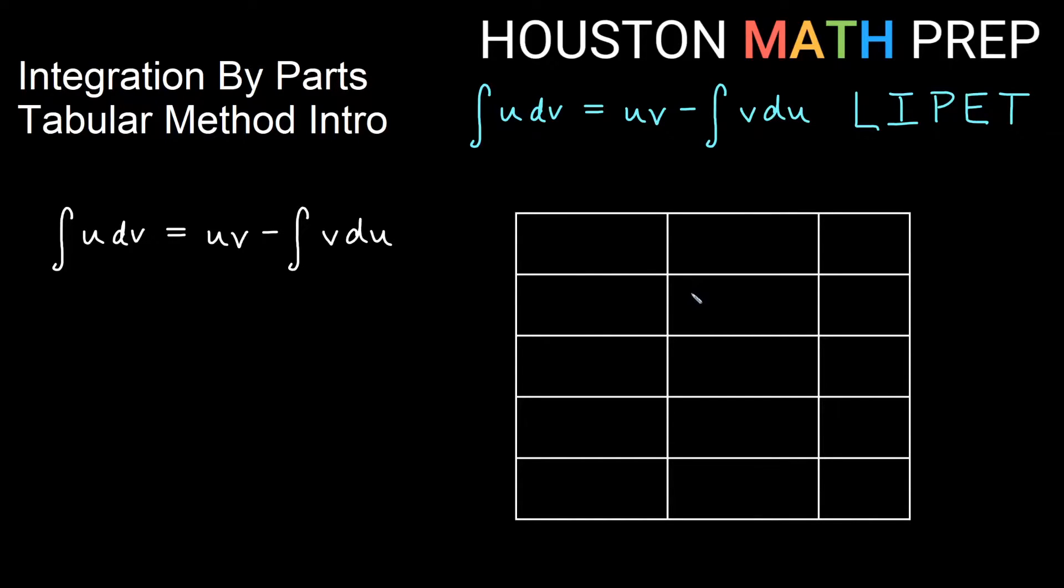In our last example video, example 4 for integration by parts, we stumbled upon an integral where we integrated something that was u dv. We used the integration by parts formula uv minus integral v du, and then what we had left over as far as the integral in our formula also needed to be done by parts.